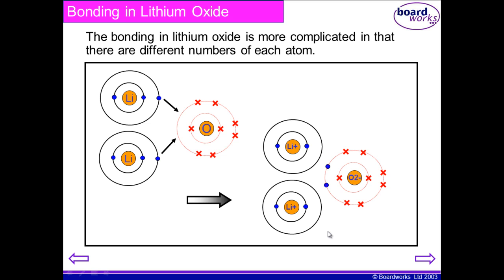The oxygen, because it has eight protons in its atom but now has ten electrons, has a 2− charge. Because of the positive charges on the lithium and the negative charge on the oxygen, they are attracted and they form a compound, lithium oxide. A bit later in the video we will look at what the formula is for that.